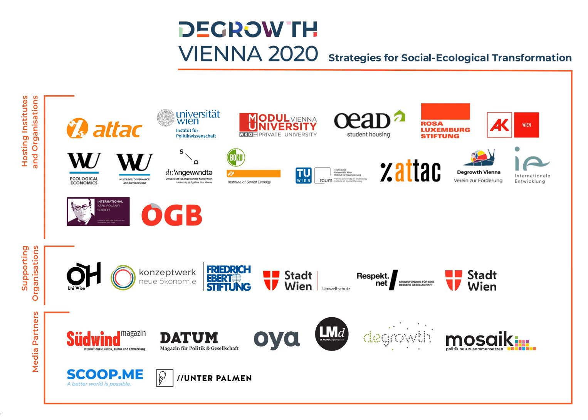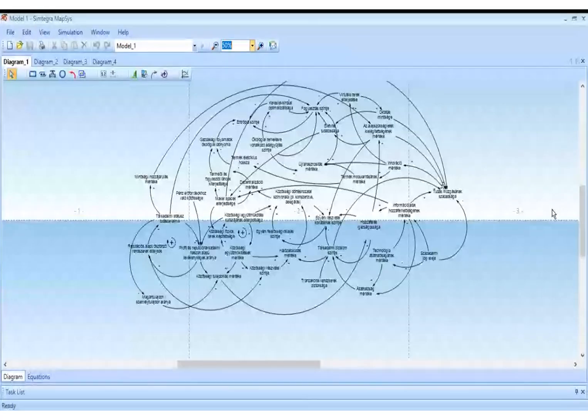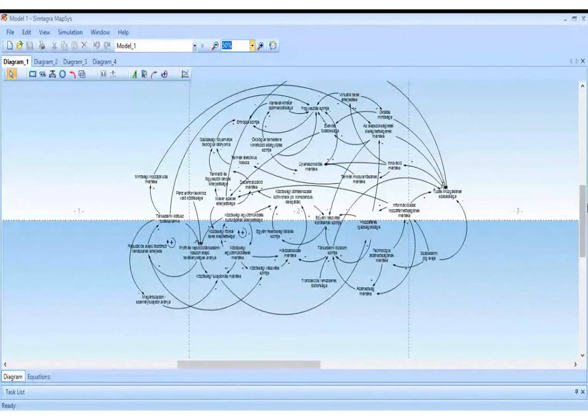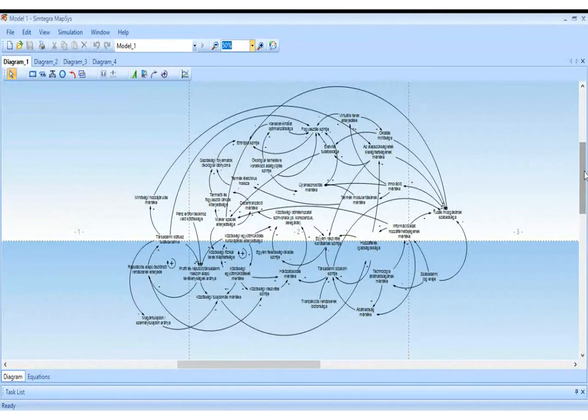Just to show you what a system map looks like — this is what a system map looks like. This is actually a system map of a cosmo-localization startup that we created. We've had research in Hungary where we did quite a few of these system maps.